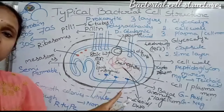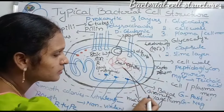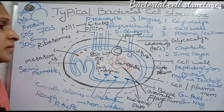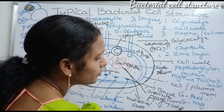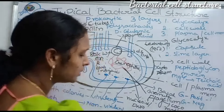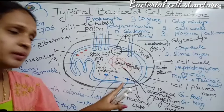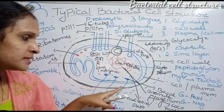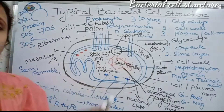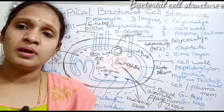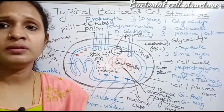There are also long thread-like structures called flagella. Flagella are used for movement or locomotion. The flagellum has three parts: hook, basal body, and filament. Based on the position and number of flagella, they are classified into subtypes, which are discussed in a previous video.